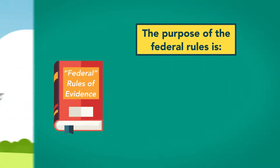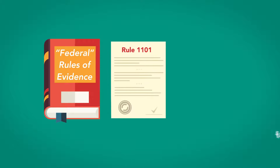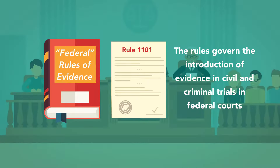The purpose of the federal rules is to administer every proceeding fairly, eliminate unjustifiable expenses and delays, and promote the development of evidence law to the end of ascertaining the truth and securing a just determination. Rule 1101 provides that the rules govern the introduction of evidence in civil and criminal trials in federal courts.